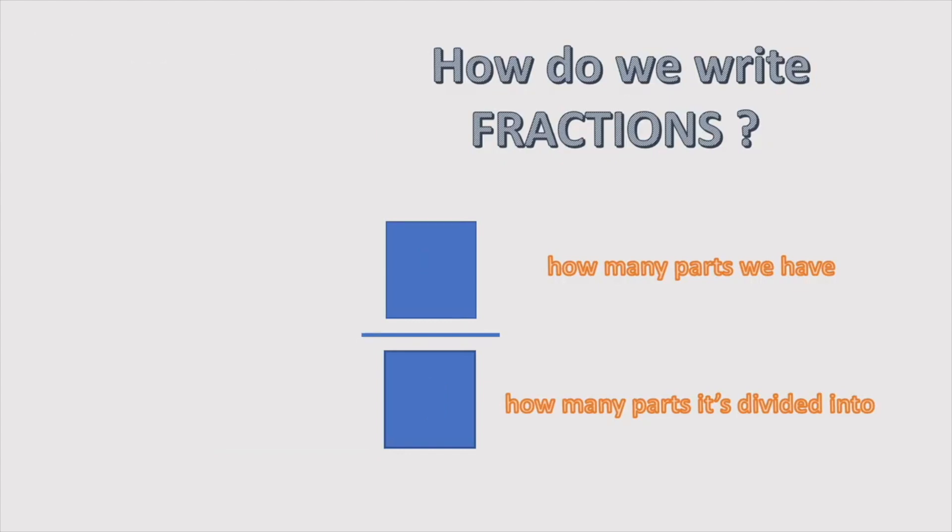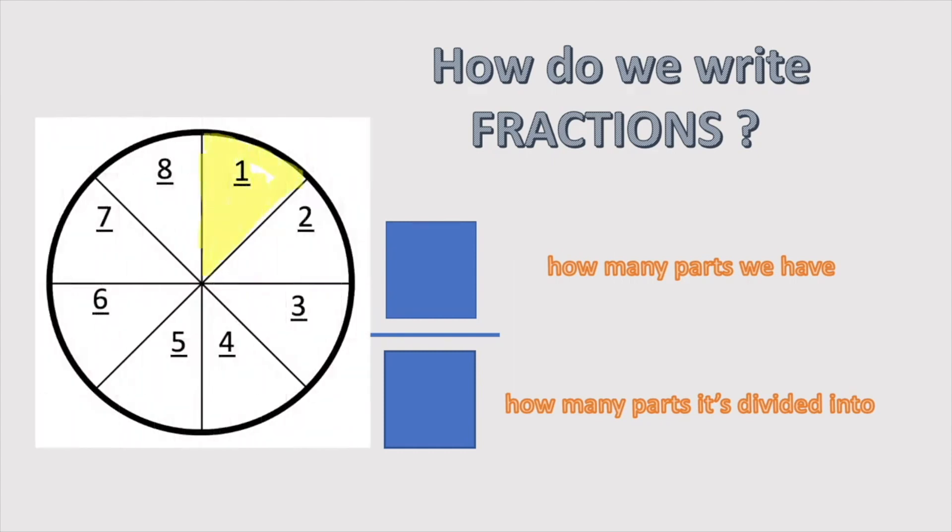What happens if one part is taken out of the whole? Well, the circle is still divided into eight equal parts. Therefore, the bottom number will still be eight, while the top number will be seven because we only have seven left.